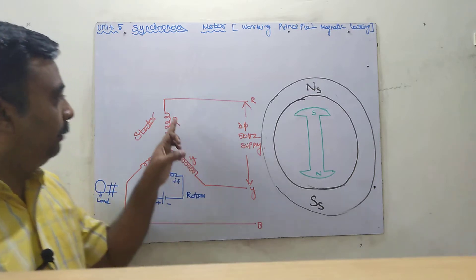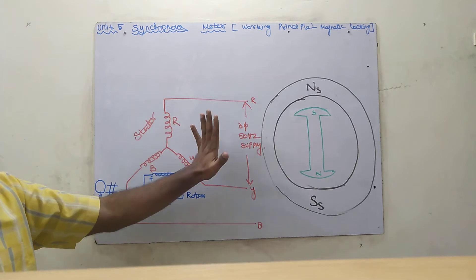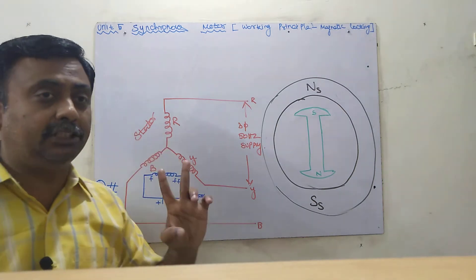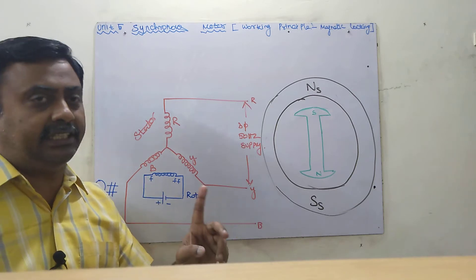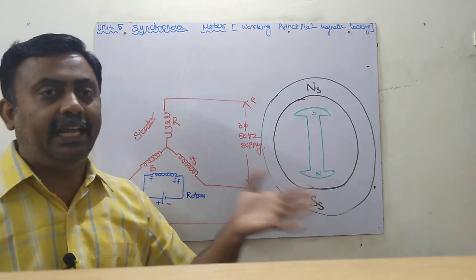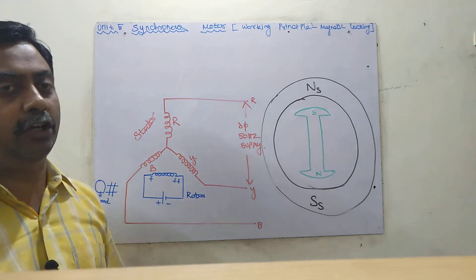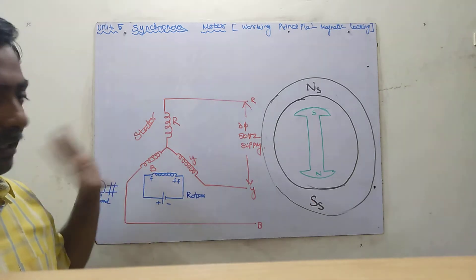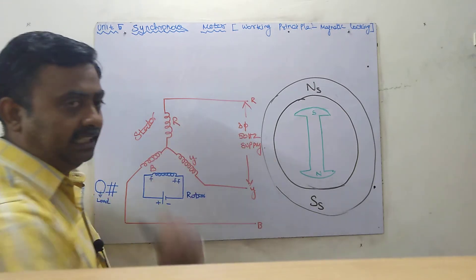The main components are the stator (RYB) and rotor. The working principle of a synchronous motor is magnetic locking. The synchronous motor is the best example of a multiply-excited system, where both the stator and rotor are converted to electromagnets. When we give three-phase supply to the stator, we are giving electric energy as input.